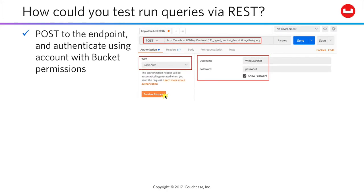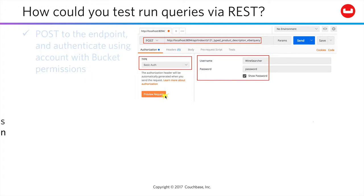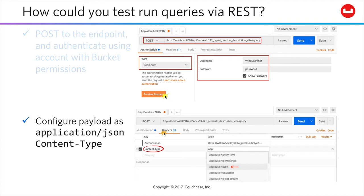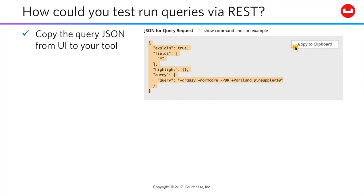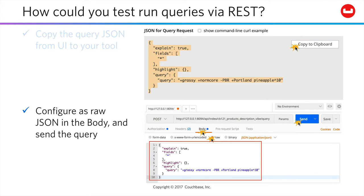A REST API tool like Postman may be easier to work with, and is what we'll assume you're using in the workbook. In Postman, you'll configure a post request to the query endpoint, assigning your bucket credentials once for all subsequent requests for this session with that endpoint. Here you'll see that we're using the username and password for the bucket-specific credential that was set up in an earlier lesson. You'll then configure your payload with a content type header of application/json. From the UI, you can copy just the JSON payload without the curl command, and paste it as raw JSON into the body of your request.